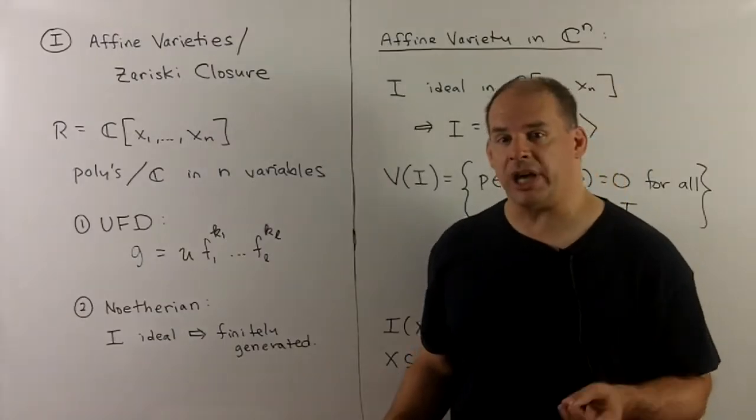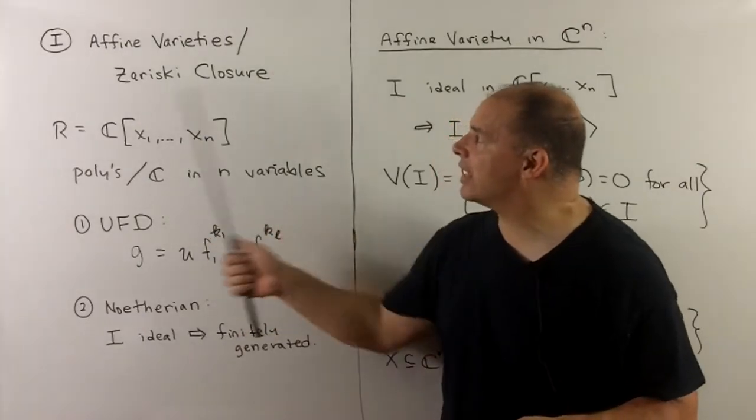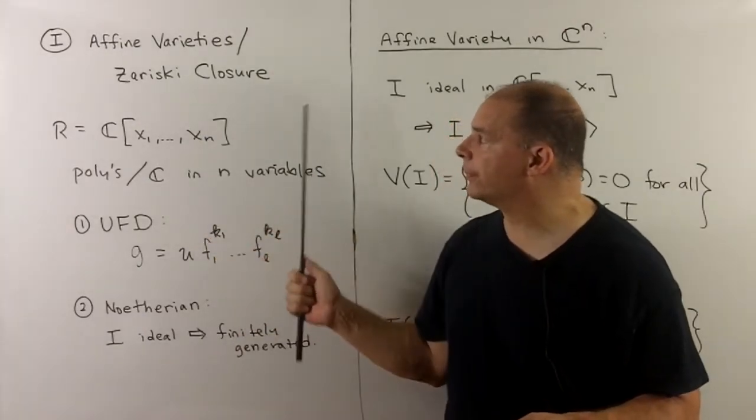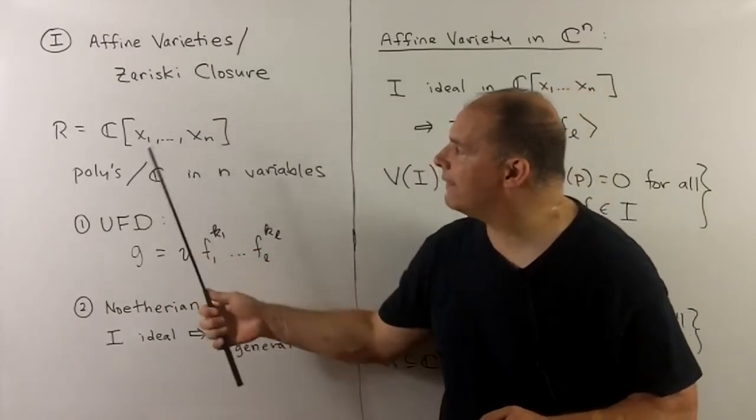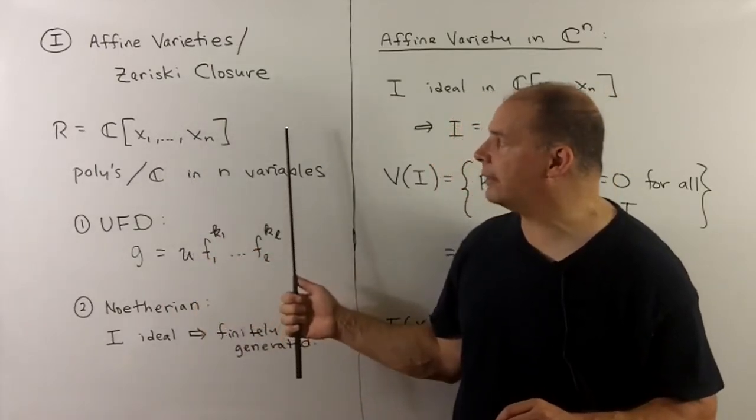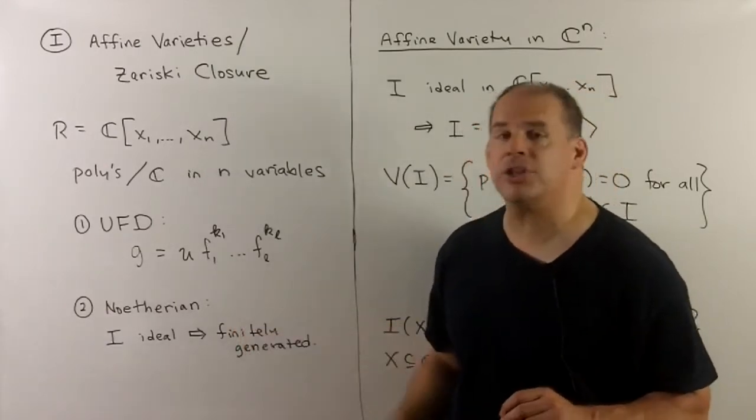We begin with basic algebraic geometry. So we have the notions of affine varieties and Zariski closure. We start with the ring R, which is C adjoined variables X1 through Xn.